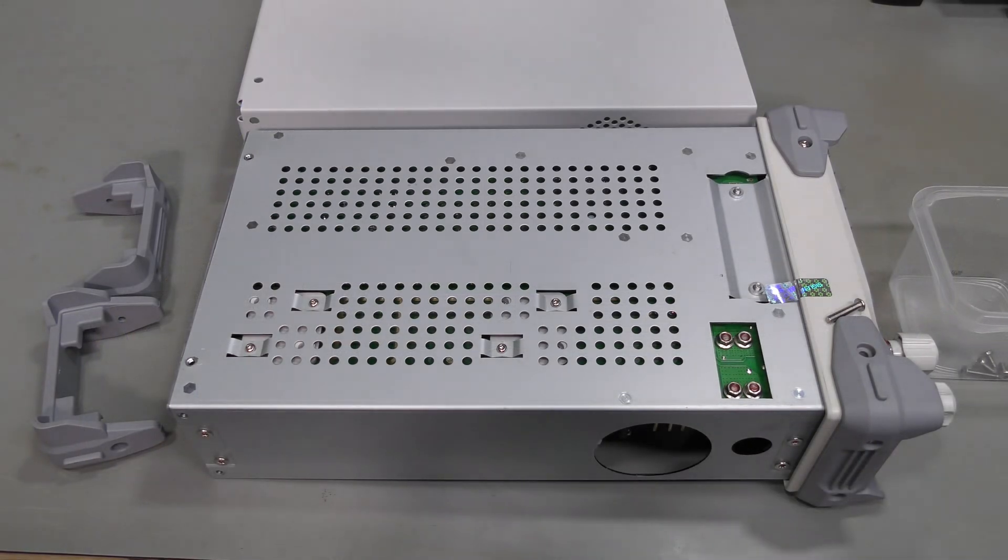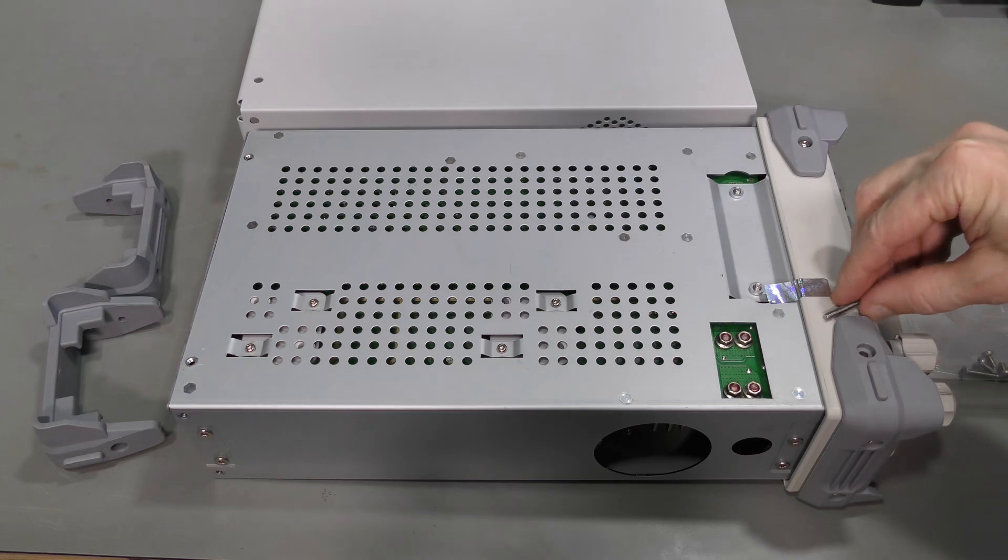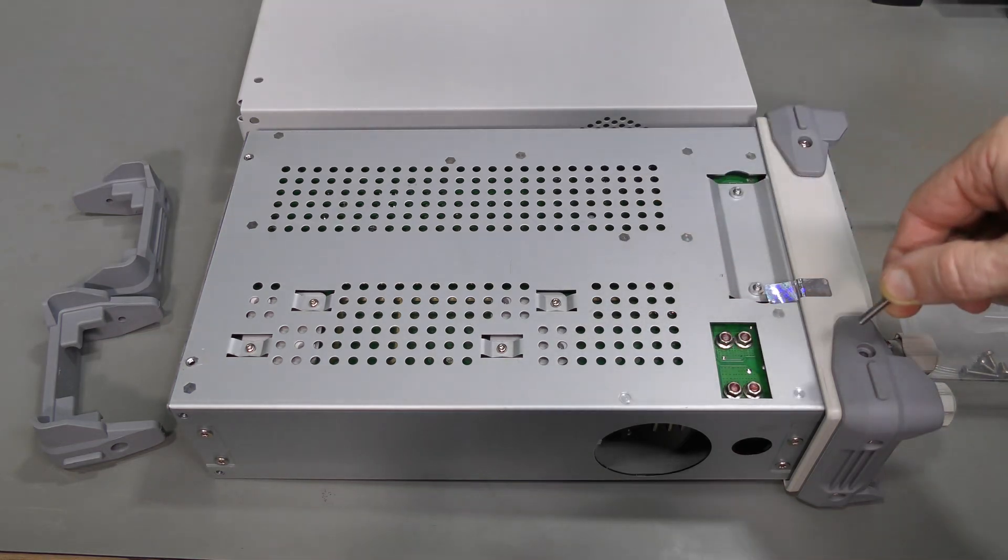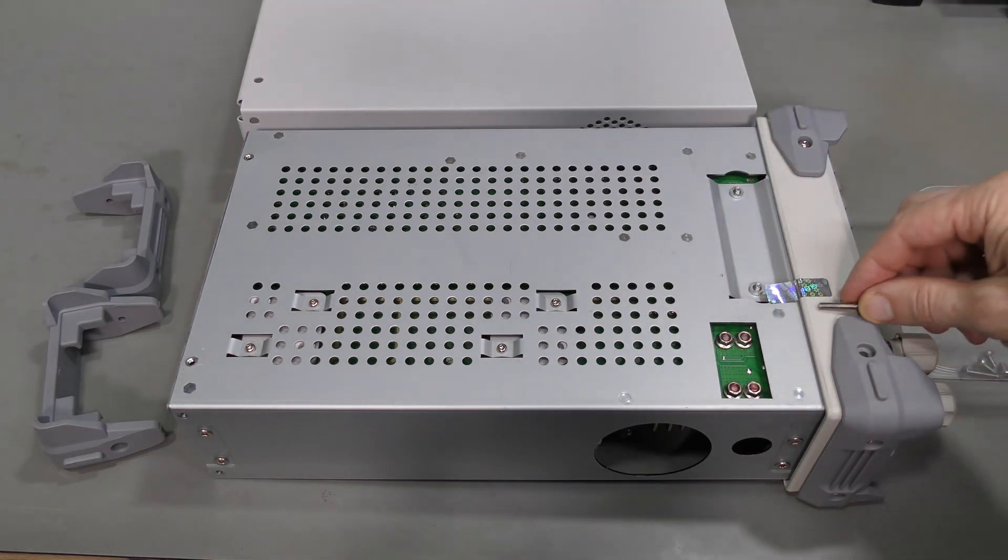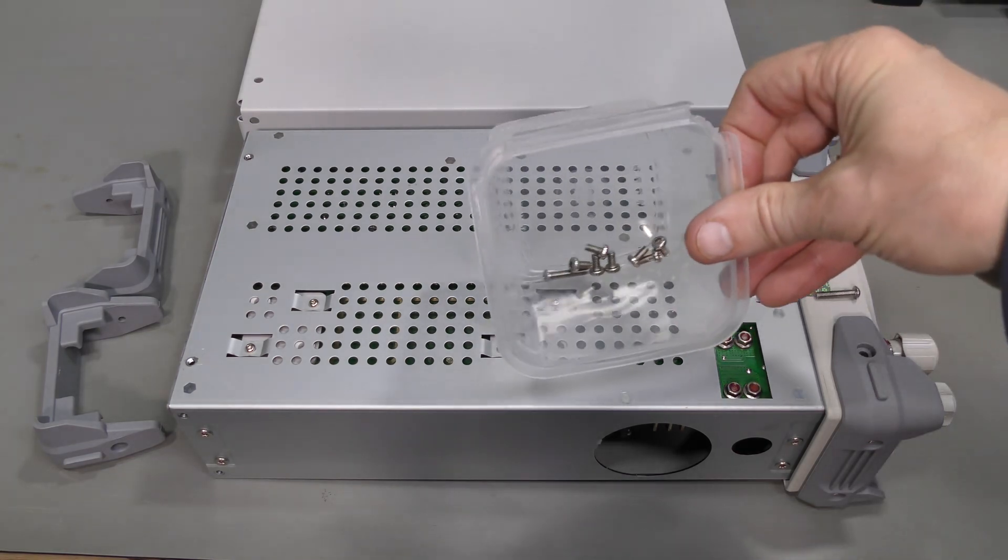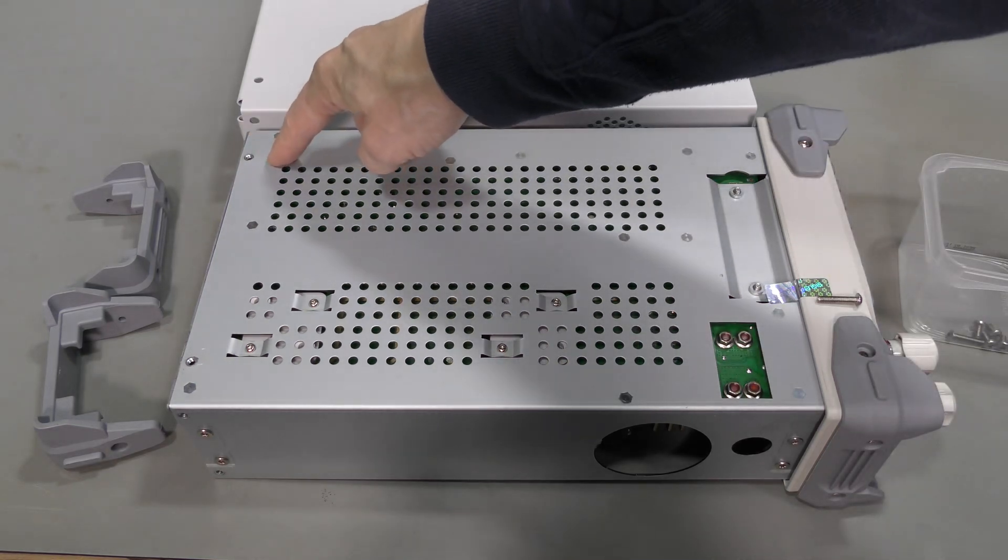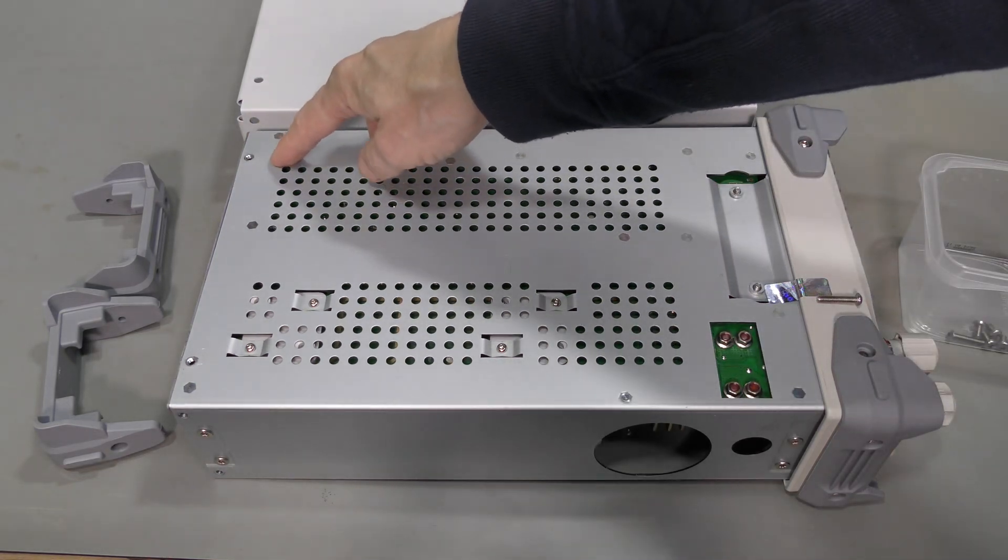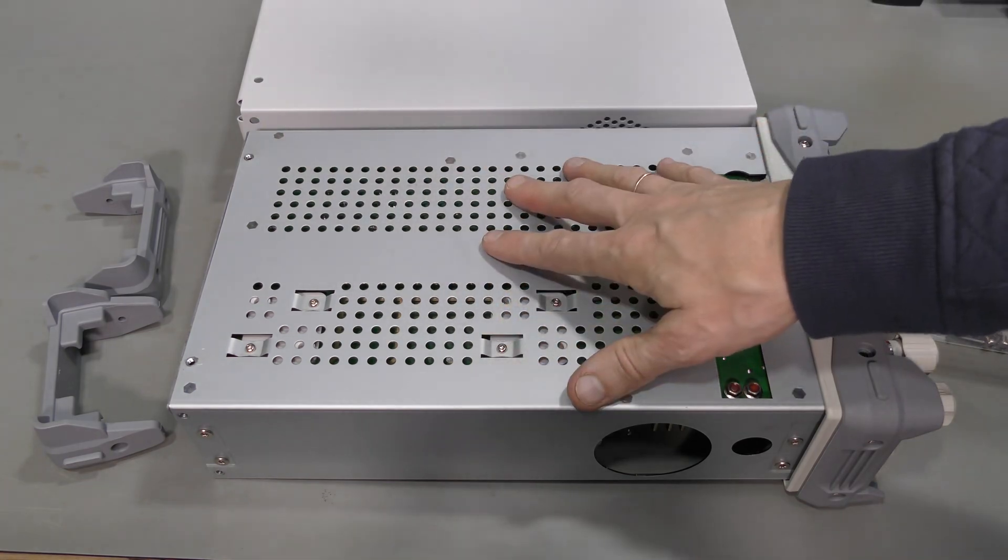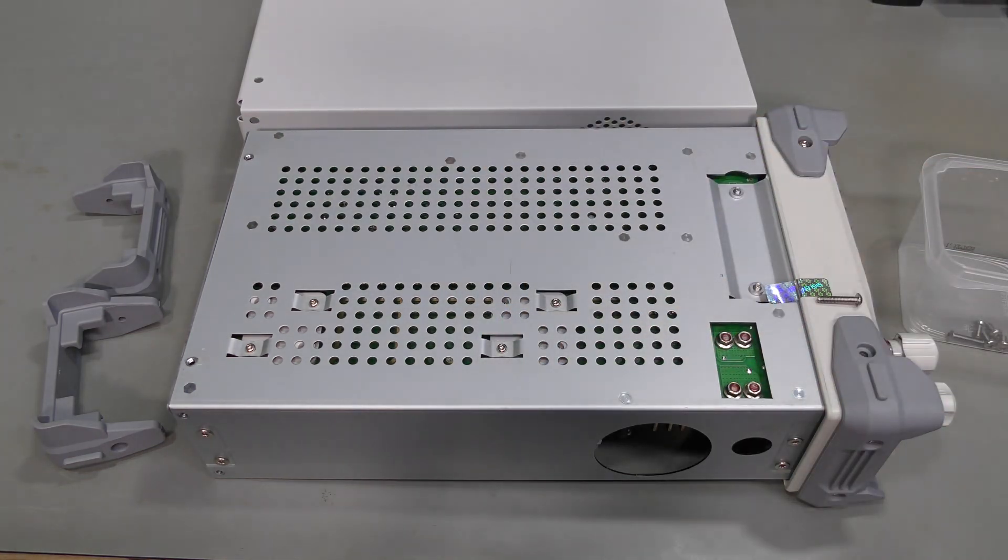So I took the cover off. And so far I found one more longer screw here on the front. All the rest are shorter ones. And unfortunately there is no way to see the board here. So I will have to take it further apart to check the board if it's damaged or not.